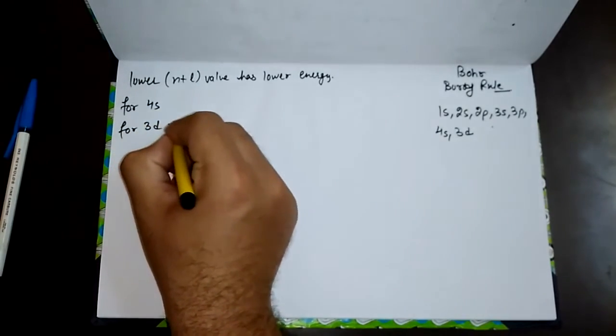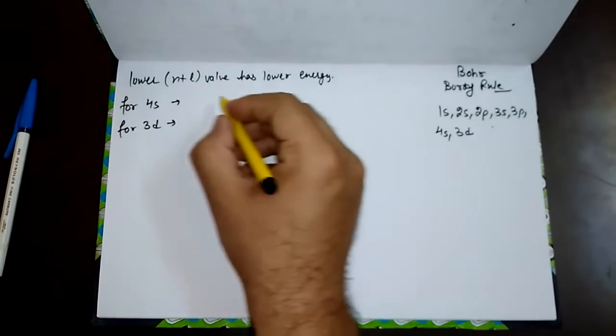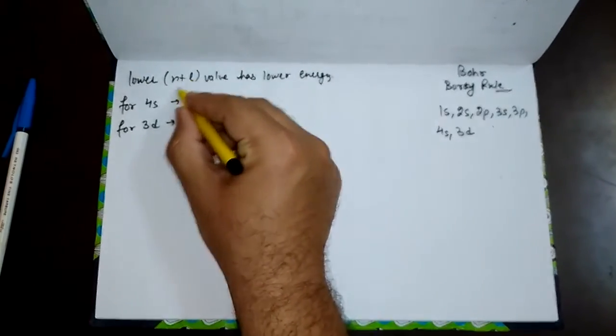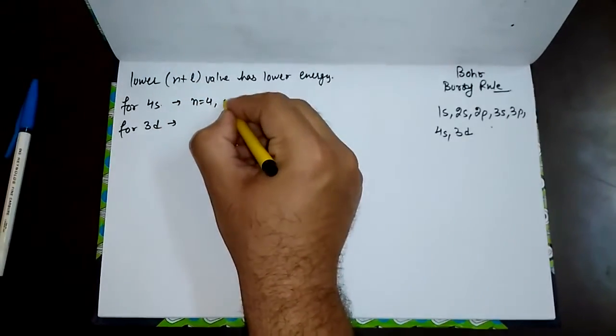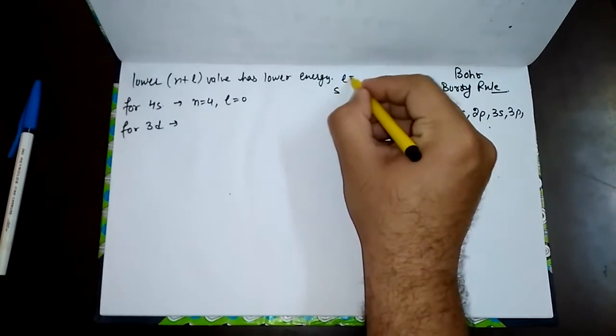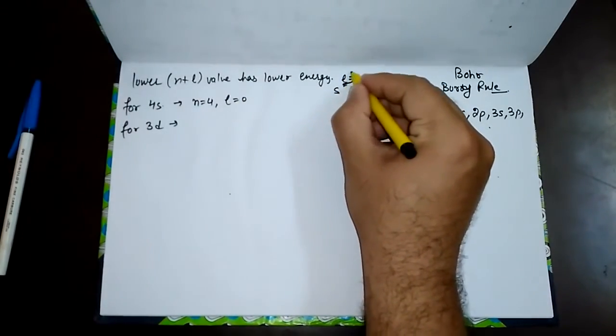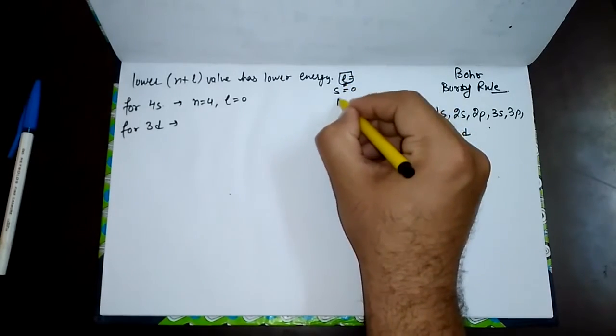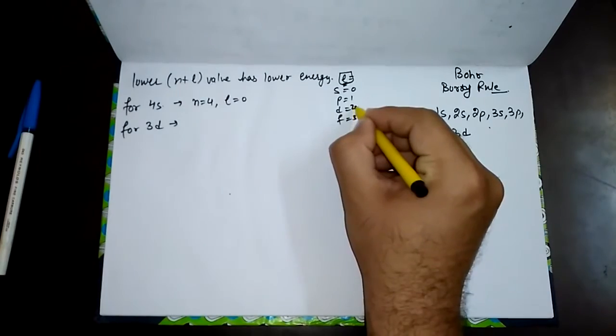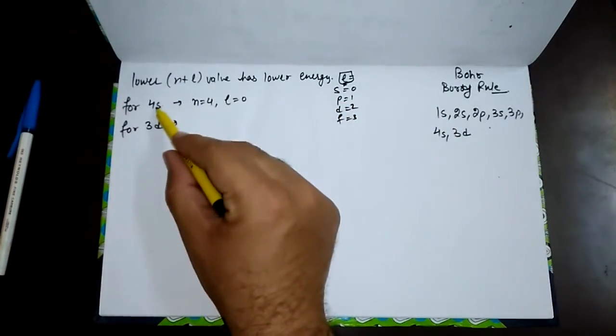For 4s, the value of n equals 4, and the value of l equals 0, because we know that for s, the azimuthal quantum number is 0; for p it's 1; for d it's 2; and for f it's 3. So for 4s, 4 plus 0 equals 4.